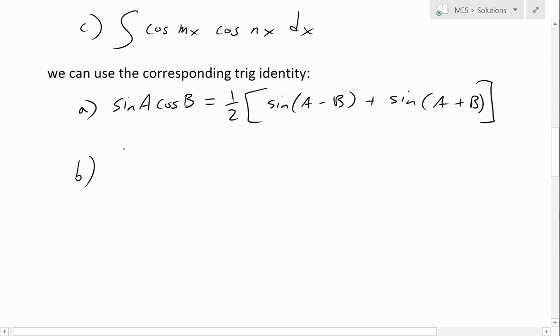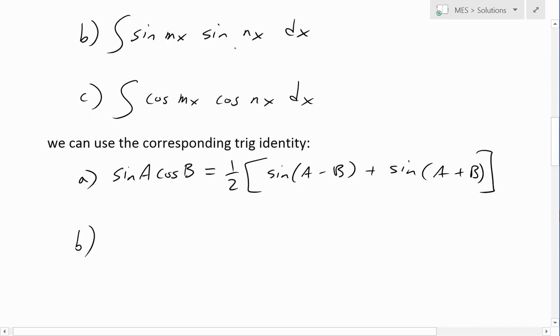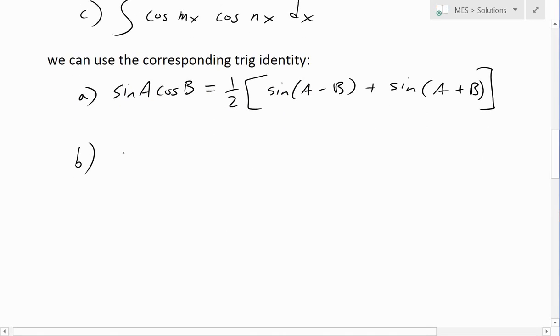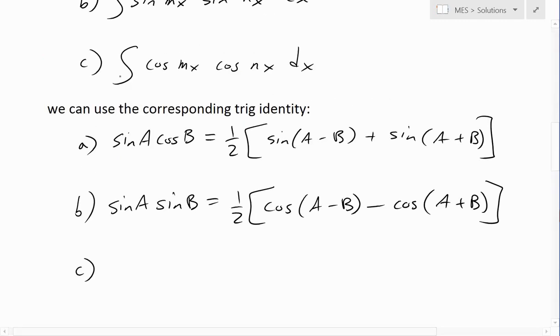And now the second type which corresponds to sine times sine, we'll have it sine A sine B equals to one half. And now this will be cos A minus B, and then we subtract cos A plus B.